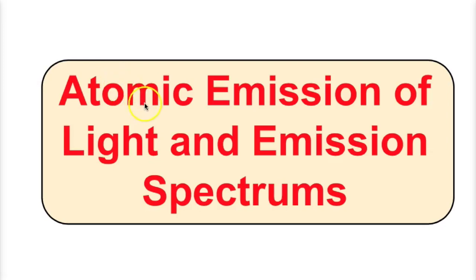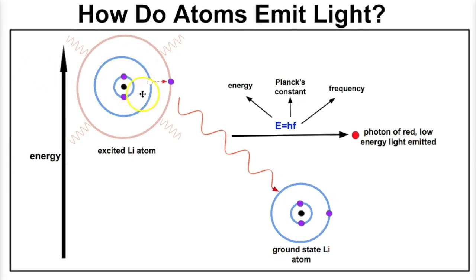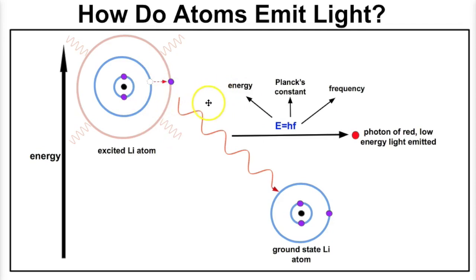Hey guys, this is Mr. Millings and today we're going to talk about how atoms release energy in the form of light, and then we're going to take a look at some emission spectrums. When you go to that Fourth of July fireworks show and see all those pretty colors, what is happening there? That's what we're going to talk about right now.